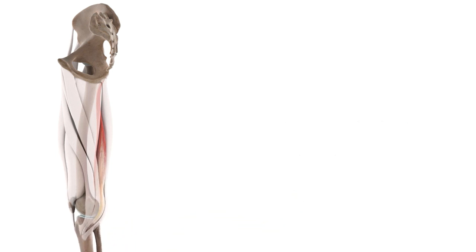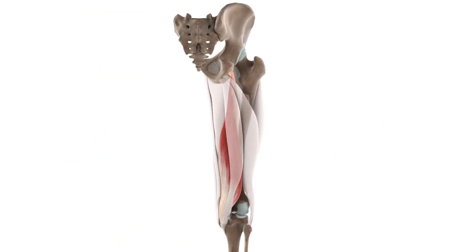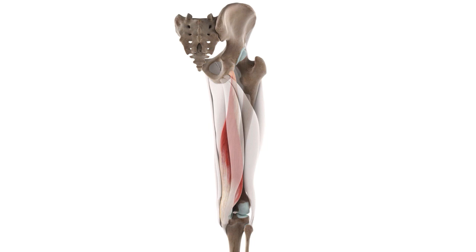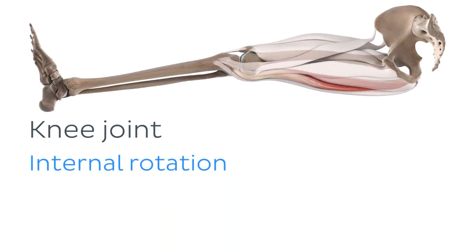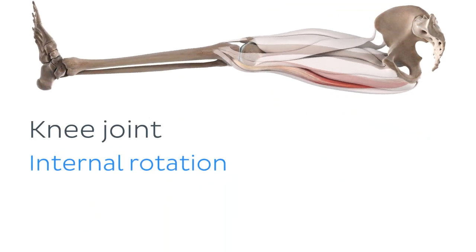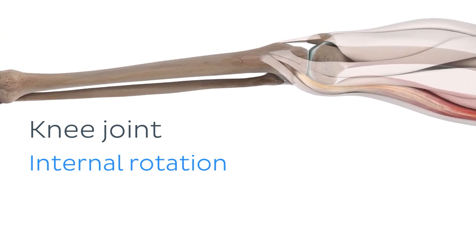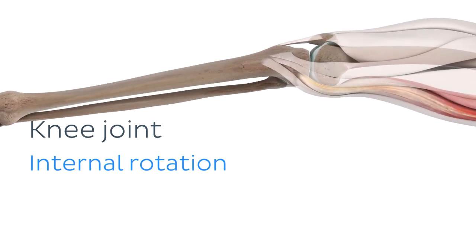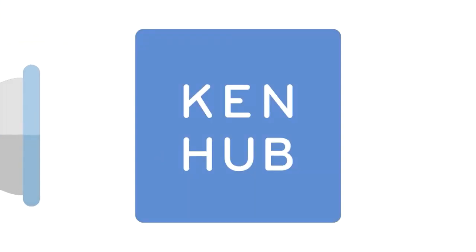The second action that is carried out by the semimembranosus at the knee joint is internal rotation. This action on the knee joint by the muscle can occur when the knee is flexed at a 90 degree angle or greater.